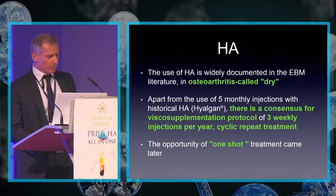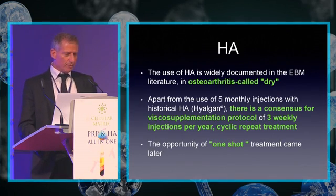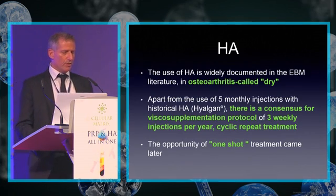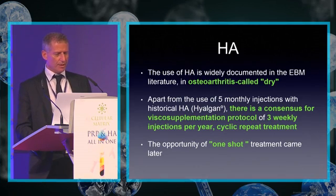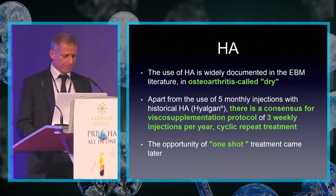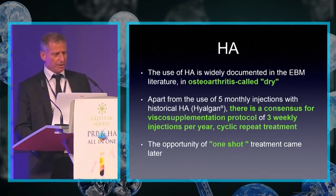The use of HA is widely documented in the evidence-based medicine literature for osteoarthritis. Apart from the historical use of five monthly injections with Hyalgon, there is a consensus viscosupplementation protocol of three weekly injections per year, with repeated treatment. The option of a one-shot treatment came later.